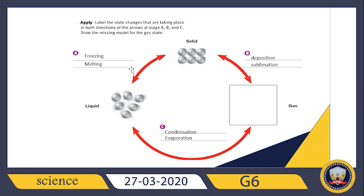From liquid to solid we call it freezing, while the process converting solid to liquid is called melting. Sublimation is when the state of matter changes from solid to gas without becoming liquid, and the opposite — from gas to solid without becoming liquid — is called deposition. When the state changes from liquid to gas, we call it evaporation, and the opposite is condensation, the change of state from gas to liquid.